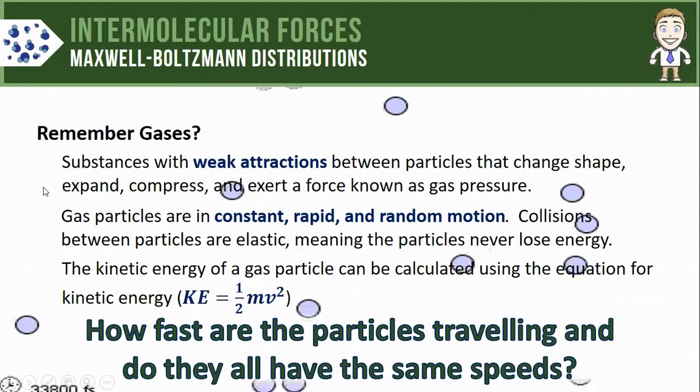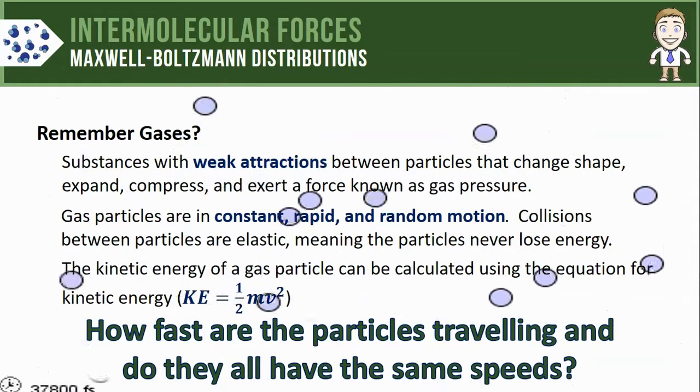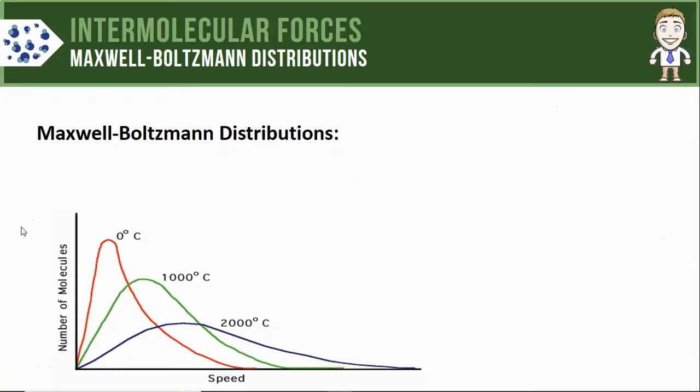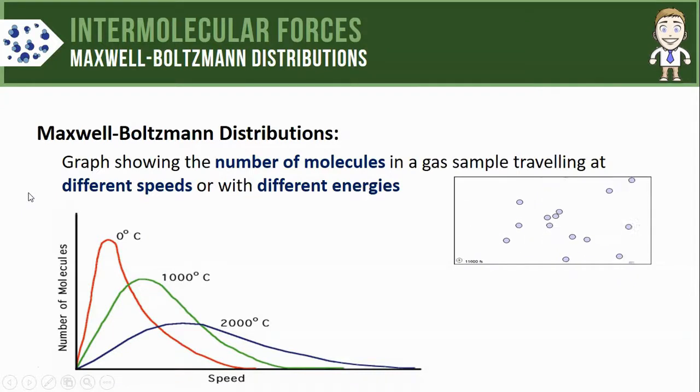In this video we're going to take a closer look at how fast those particles are traveling and whether or not they all have the same speeds. Of course, we can do that with a Maxwell-Boltzmann distribution. It's simply a graph that shows the number of molecules in a gas sample traveling at different speeds or sometimes with different energies.